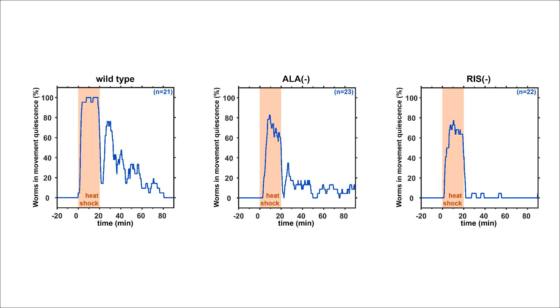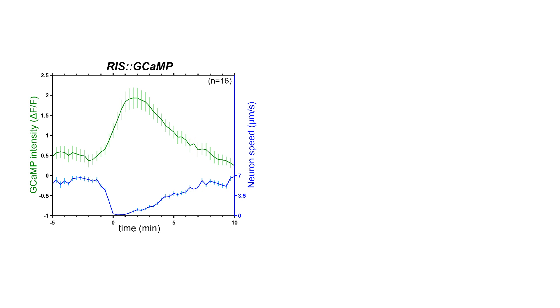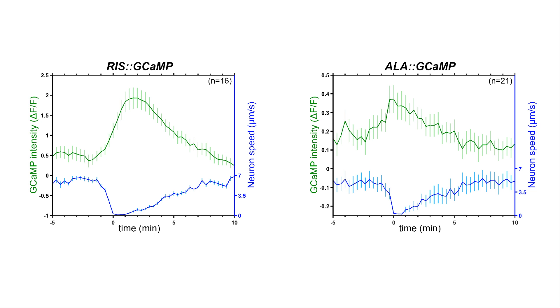Calcium imaging of RIS showed that depolarization of this neuron correlates with acute quiescence bouts. ALA activated already before the sleep bout, suggesting that ALA could be an upstream activator of RIS. To test this hypothesis, we optogenetically activated ALA and measured RIS activity. ALA could depolarize RIS, confirming that it is an upstream activator of RIS.